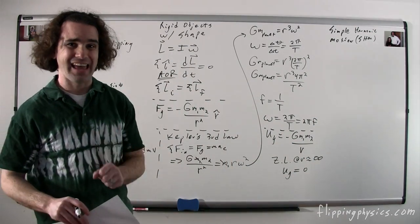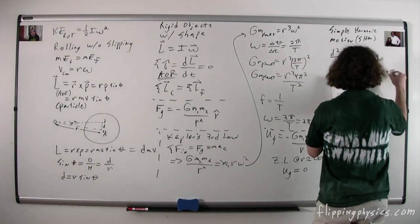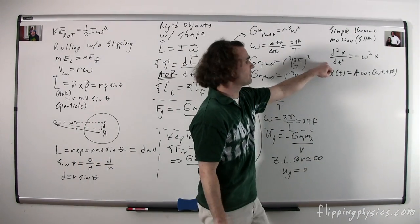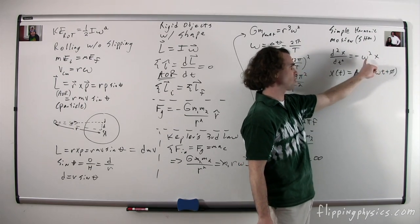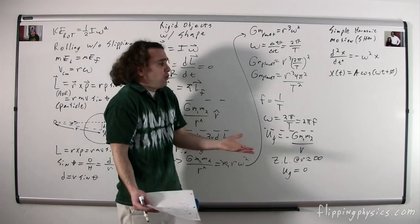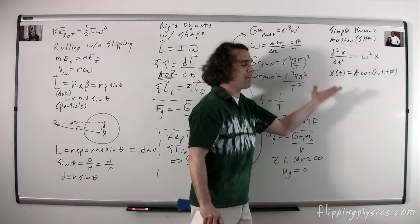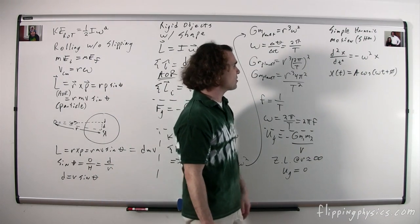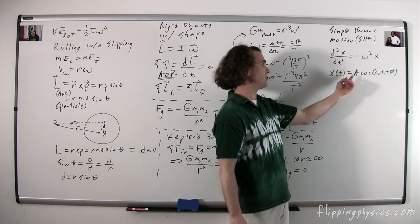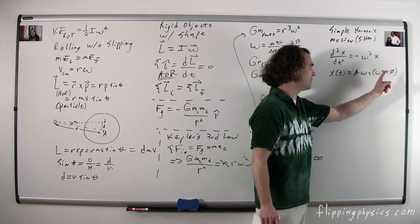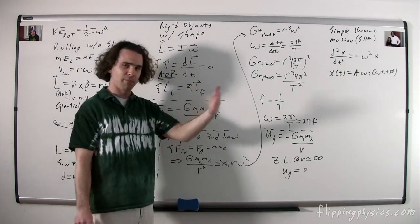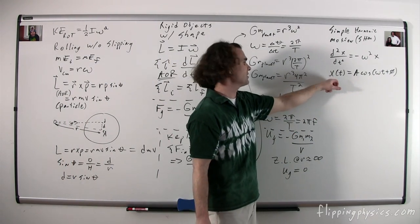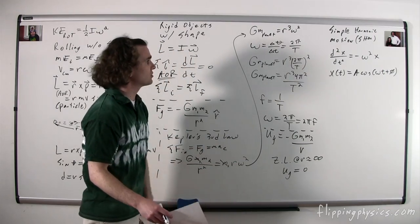Simple harmonic motion, SHM: the condition is that the second derivative of position as a function of time equals negative omega squared times position, where omega is the angular frequency. If you can show an object's motion follows that pattern, you can identify the angular frequency and find the period. One solution to this equation is x(t) = A cos(ωt + φ), where A is amplitude and φ is the phase constant. Take the derivative for velocity, the second derivative for acceleration.